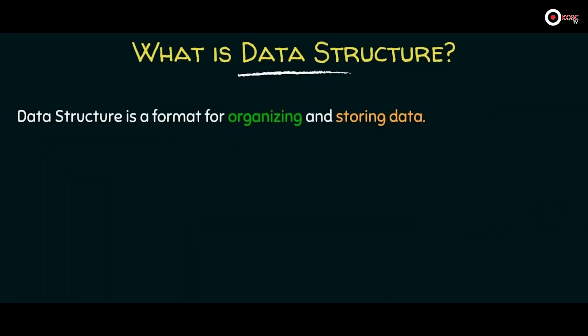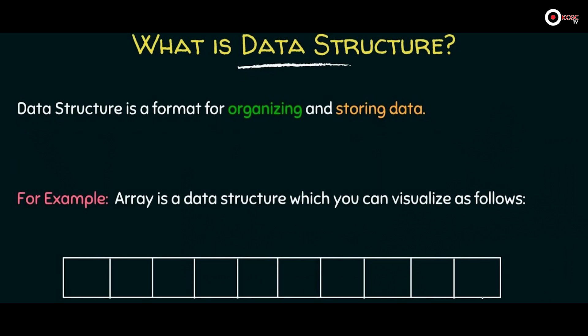This definition may seem a little confusing, so let me divide it into three parts. First: an array is a data structure because it is a format for organizing and storing data. You can visualize an array as a large chunk of memory divided into smaller blocks, where each block is capable of storing data values. So an array can store data — that's why it is a data structure.